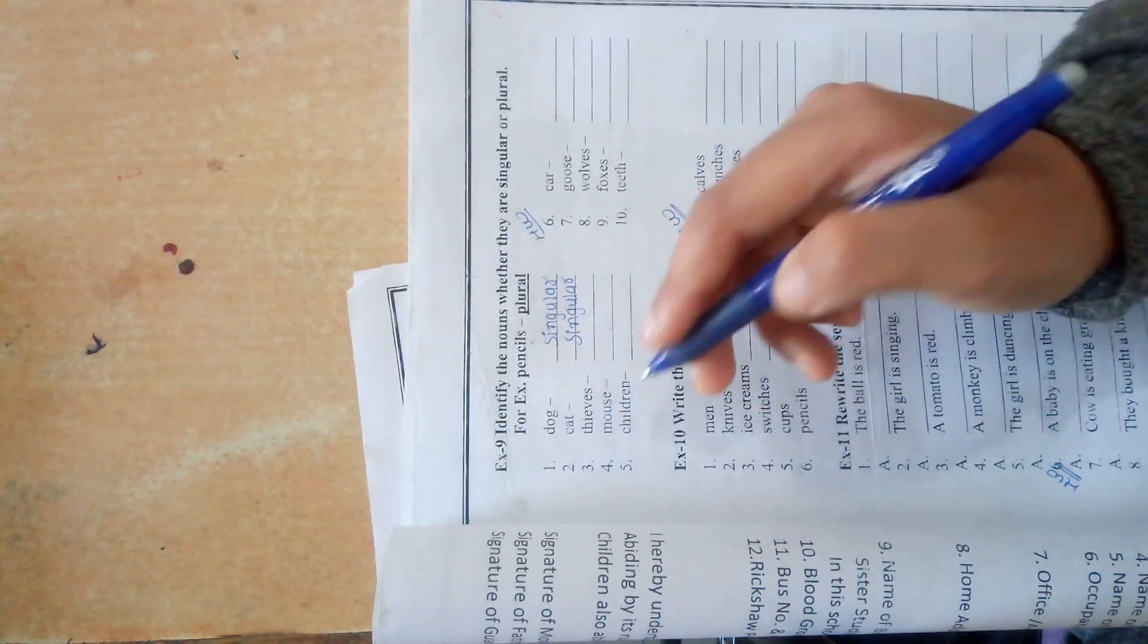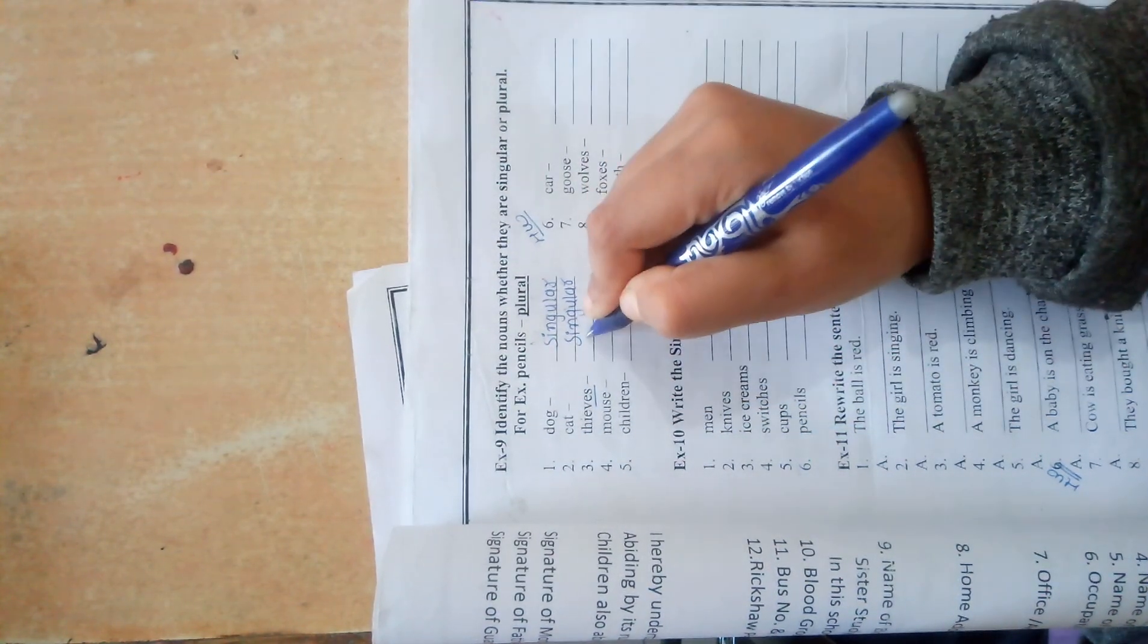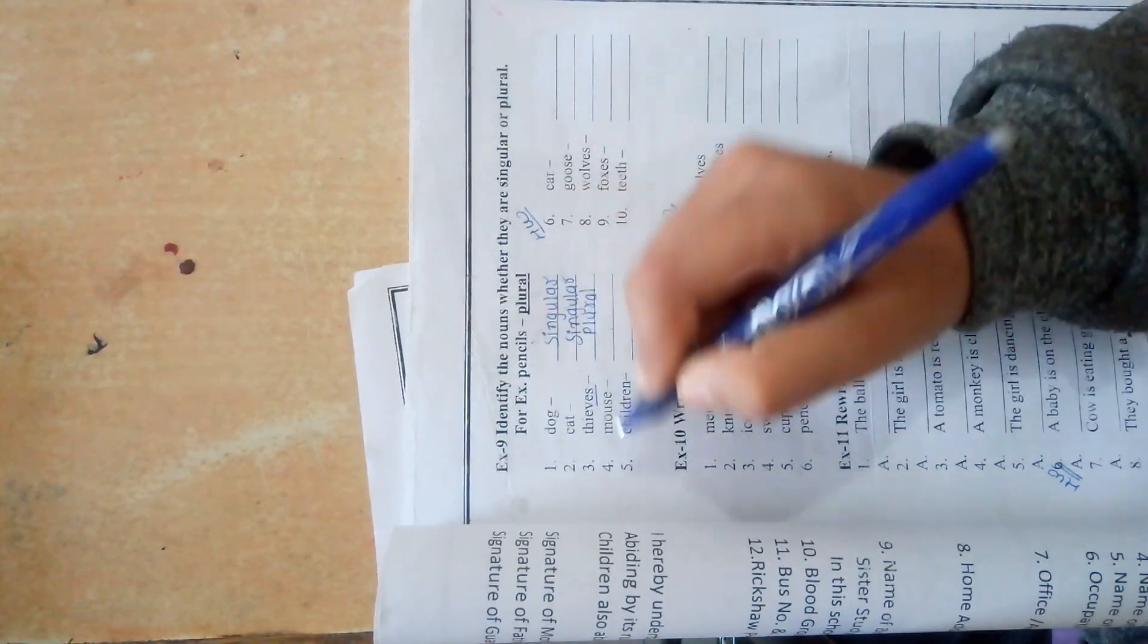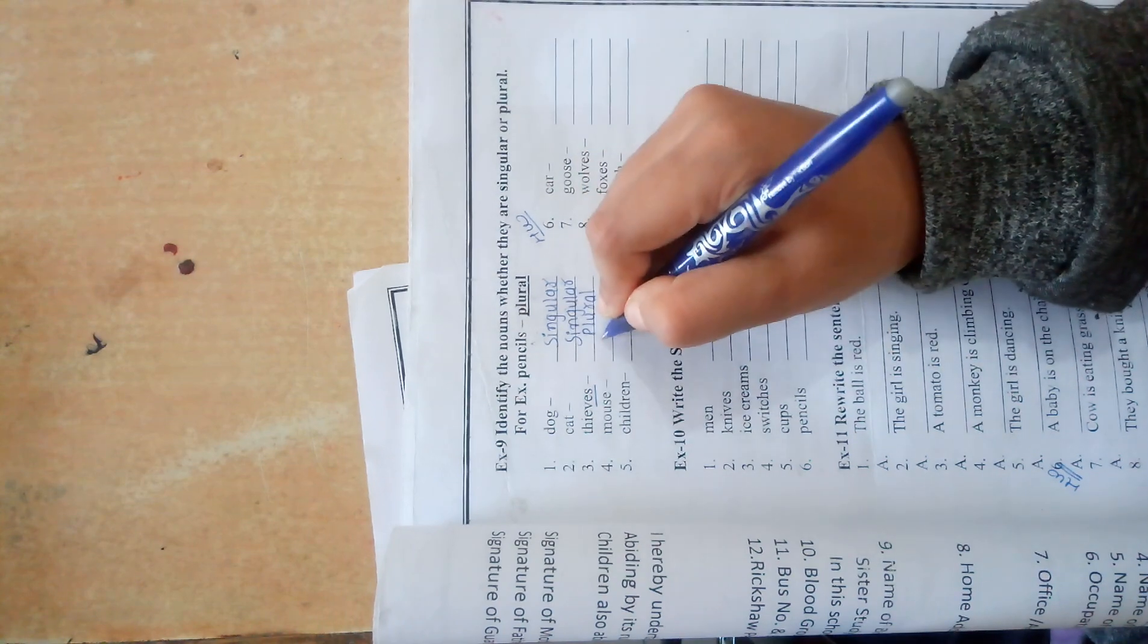Number 3: thieves. Here VES is there so it is plural. Number 4: mouse. It is singular.